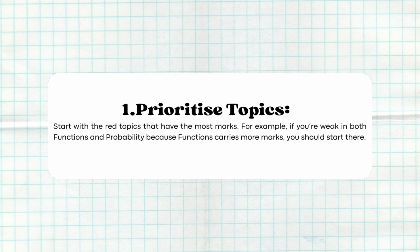Number one: prioritize topics. Start with the red topics that have the most marks. For example, if you are weak in both functions and probability, because functions carries more marks, you start there.